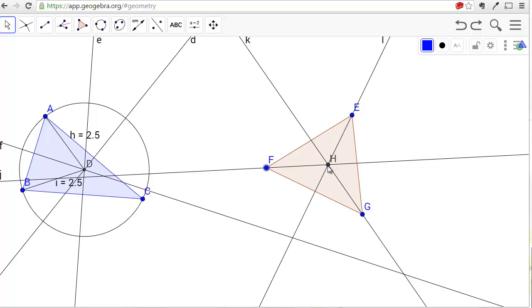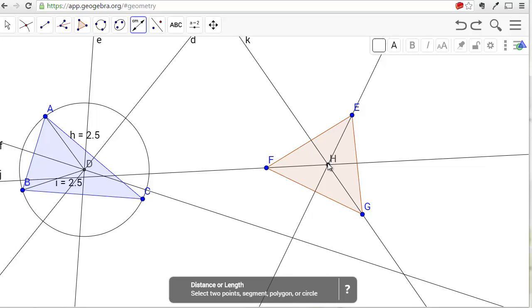So it appears that this point of concurrency may be equal distances between the three sides. So let's find that distance. The distance between H and this side G1 is 1.12.